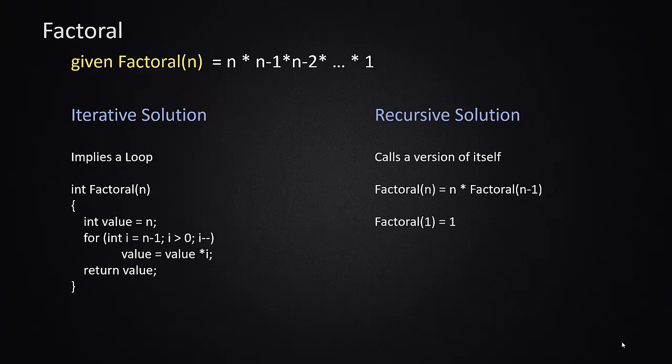In the recursive solution, the function calls a version of itself. Factorial of n is defined to be n times factorial of n minus 1. Since that's the same function call, you're calling factorial again with one less value, which effectively becomes n minus 1 times factorial of n minus 2, and so on. This process would continue infinitely unless there is a stop condition. We know that the factorial of 1 is defined to be 1, so if our code checks whether the input is 1, it can simply return 1 without recursing deeper. We call that a stop condition.